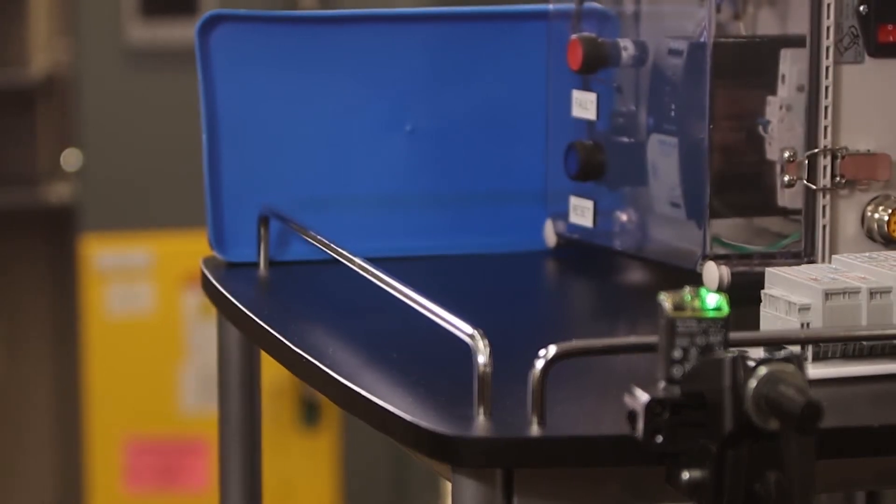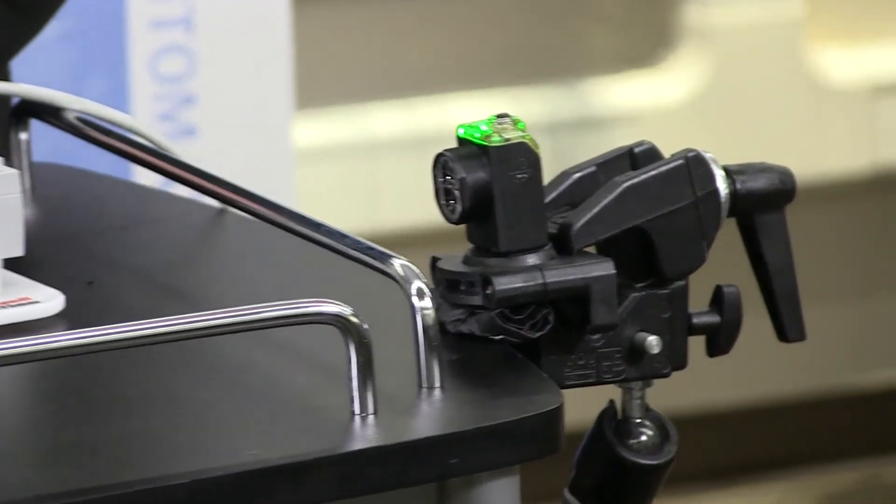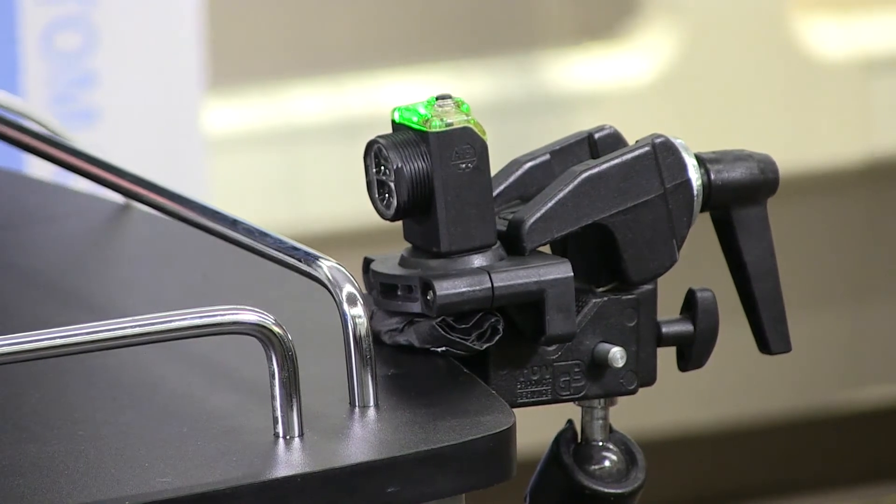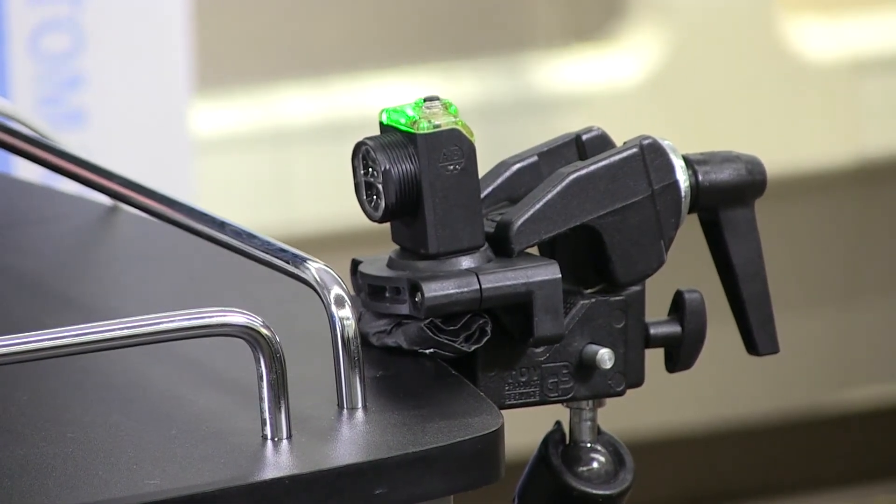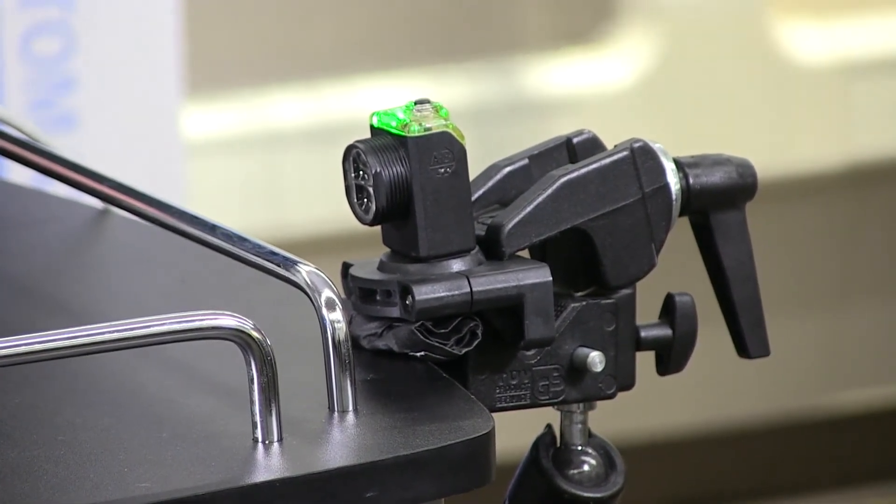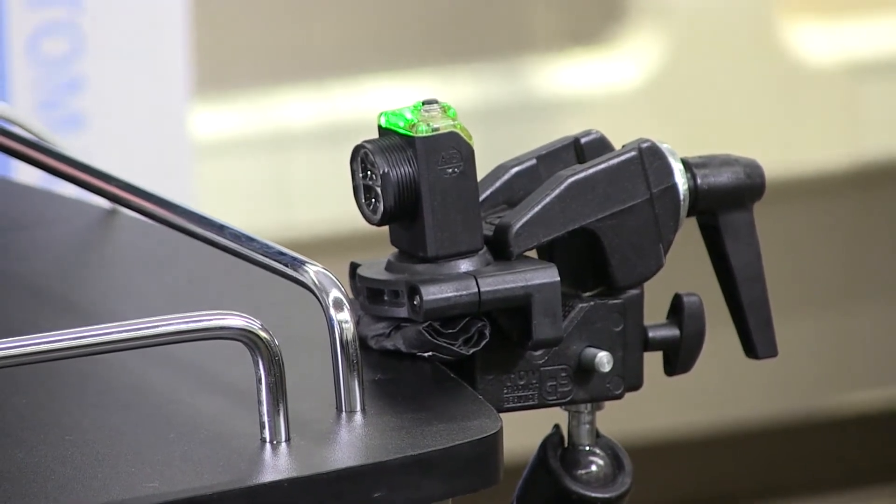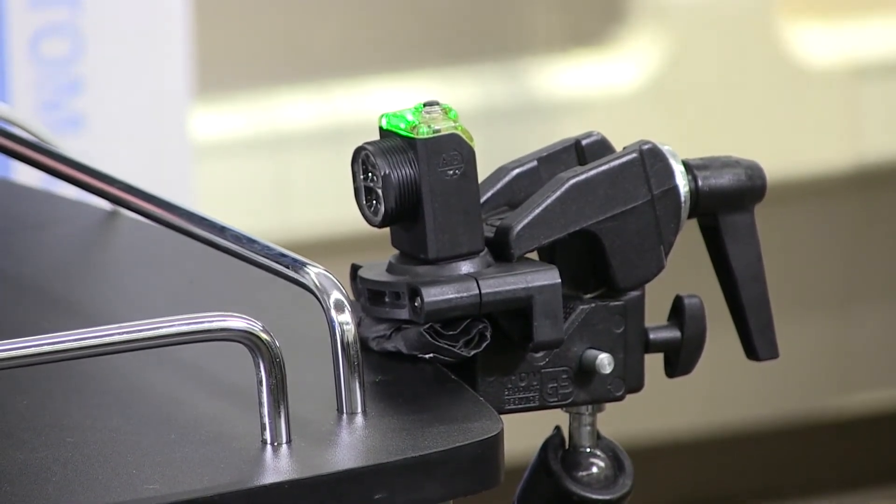Now you can teach the sensor your specific application. First, the green LED should be on, indicating that the sensor is powered. The orange LED may or may not come on depending on if the sensor has been taught before. Don't worry about whether it came on or not.